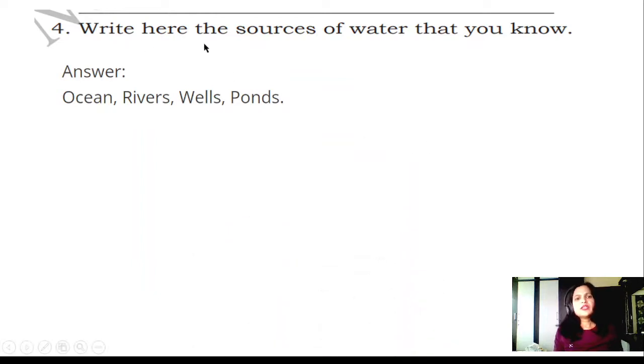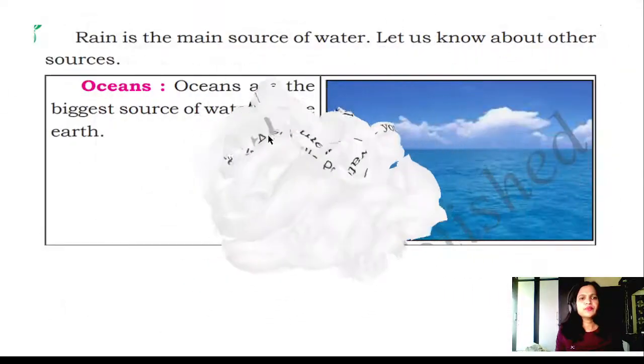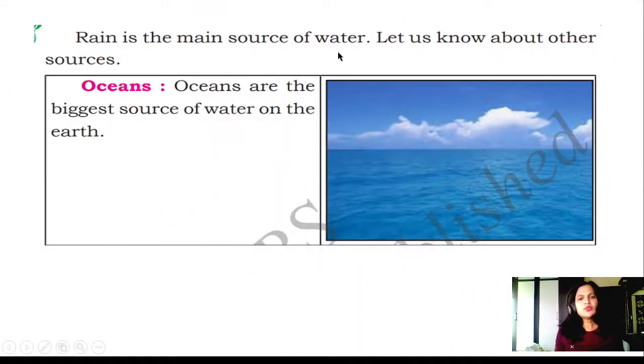Fourth question: Write here the sources of water that you know. Answer: Oceans, rivers, wells, ponds. Rain is the main source of water. Let's now learn about the other sources.